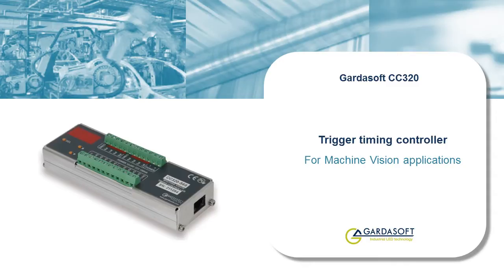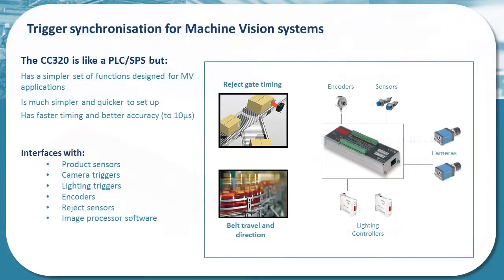For example, it has a low I/O count, but with very high-speed response dedicated to triggering and sequencing purposes. The CC320 is similar to a PLC in that it controls I/O such as sensors, switches, encoders and reject gates. But unlike a PLC, its only task is focused on ultra-high-speed triggering and sequencing. Its dedicated design enables it to achieve response times to 750 kHz and timing accuracy to 10 µs.